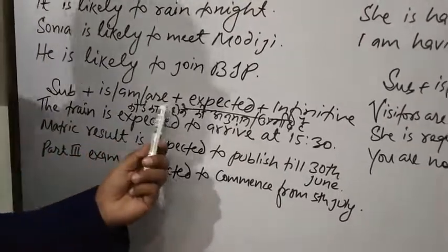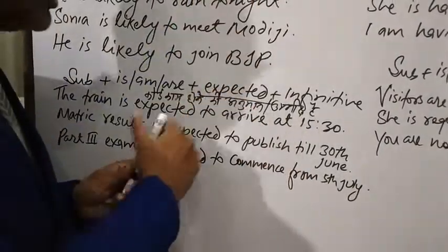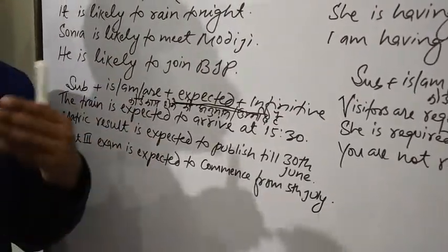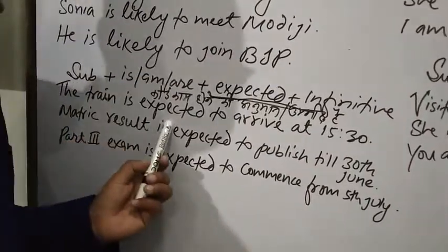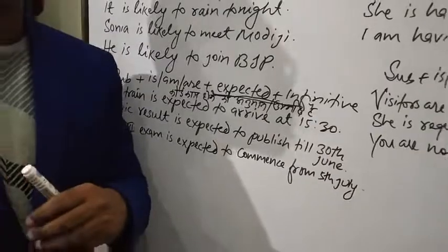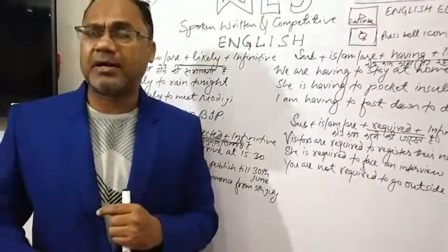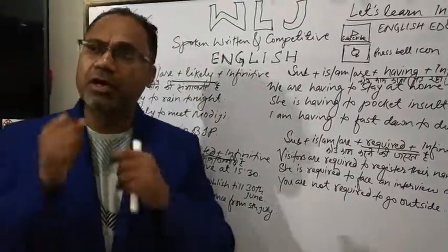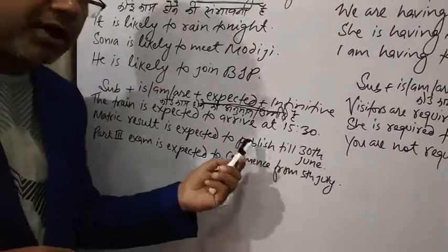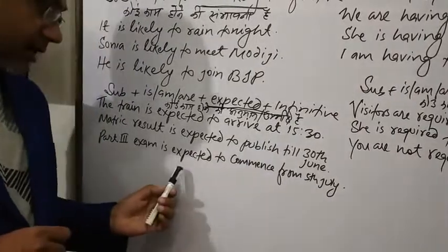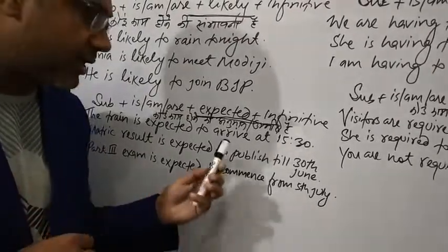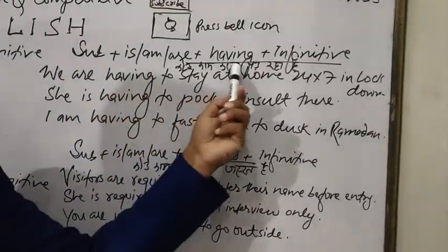The next structure is: Subject + is/am/are + expected + infinitive. It has the same structure, only 'likely' is replaced by 'expected'. For example: 'The train is expected to arrive at 15:30.' We use 'expected' when something is anticipated or estimated to happen.